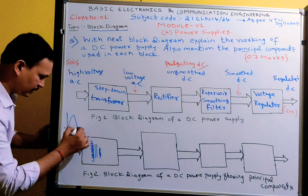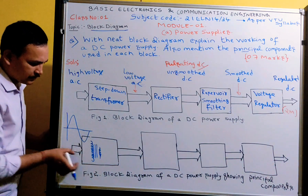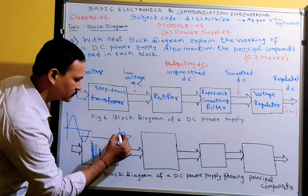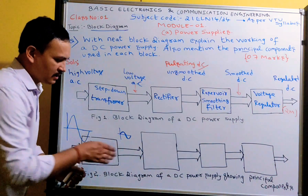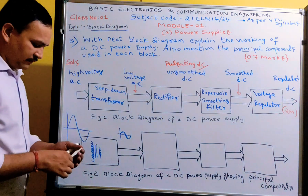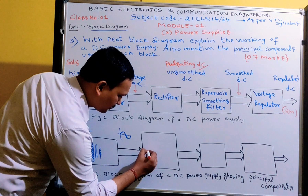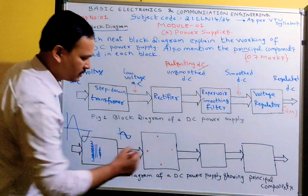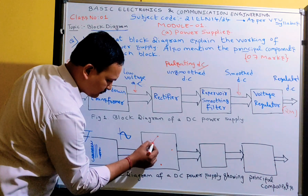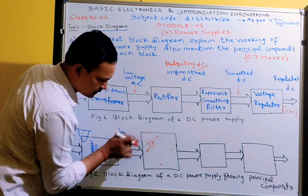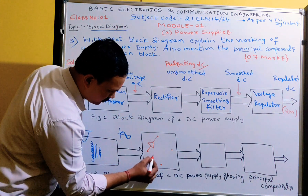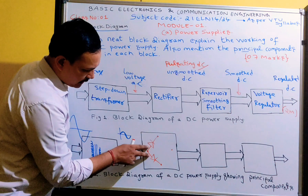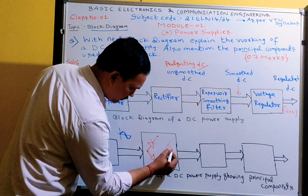So the input waveform is high voltage AC, and the output of the transformer is low voltage AC. This low voltage AC is given to the rectifier. The principal component in the rectifier is diodes. To draw the bridge rectifier circuit inside the block, mark four dots in a rhombus shape and draw diodes — group all anodes to one side and all cathodes to the other side to form the bridge rectifier.